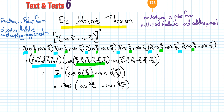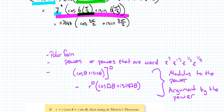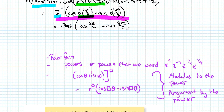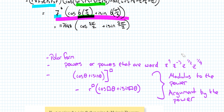De Moivre's Theorem allows us to jump from the expanded form directly to the simplified line. In polar form, this is De Moivre's Theorem — we use it when powers are large, such as Z to the power of 9, or a complex number to a large or negative power, or even fractional powers, for which we'd use a form called general polar form — but that's a future topic.